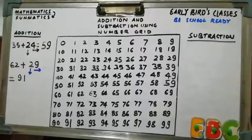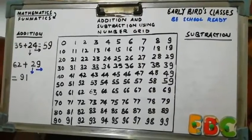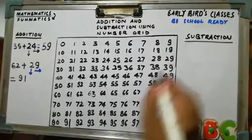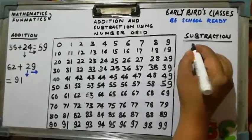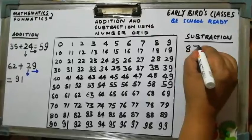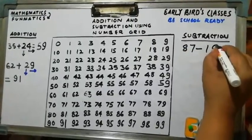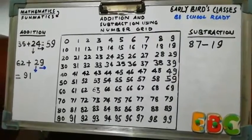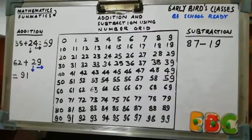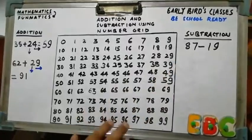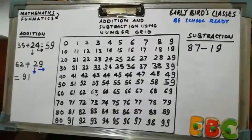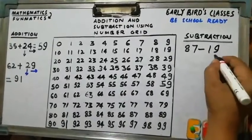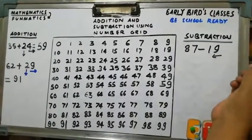Now using same number grid, we are going to subtract two numbers. So let's take example 87 minus 19. Now process is little bit reverse. First is we have to locate 87.